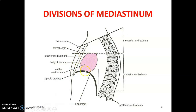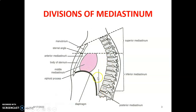The boundaries of the middle mediastinum are the pericardium, inferiorly the thoracic diaphragm, and superiorly the line dividing the mediastinum into two. The boundaries of the posterior mediastinum include the line from the sternal angle to the T4-T5 junction, the vertebral bodies of T5 to T12, inferiorly by the thoracic diaphragm, and anteriorly by the posterior border of the pericardium.